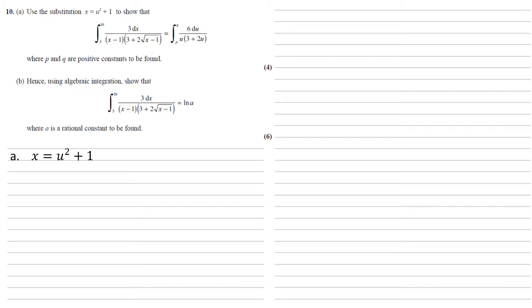So we've got that x equals u squared plus 1. If we differentiate with respect to u, we get dx by du equals 2u. Multiplying both sides by du gives us that dx equals 2u du.